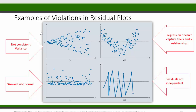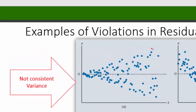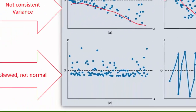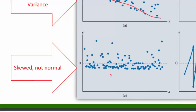Here are some examples that exhibit distinct patterns violating at least one of those conditions. The first panel shows the spread of residuals increasing as x values increase — a funnel shape — so the errors do not have constant variance. In the second panel, residuals are negative in the middle and positive for smaller and larger x values, so the centers of the spread are not consistently at the zero line — they form a curve shape. In the third panel, the residuals are not symmetric around the zero line; the negative residuals are close to zero and the positive residuals are far from it.